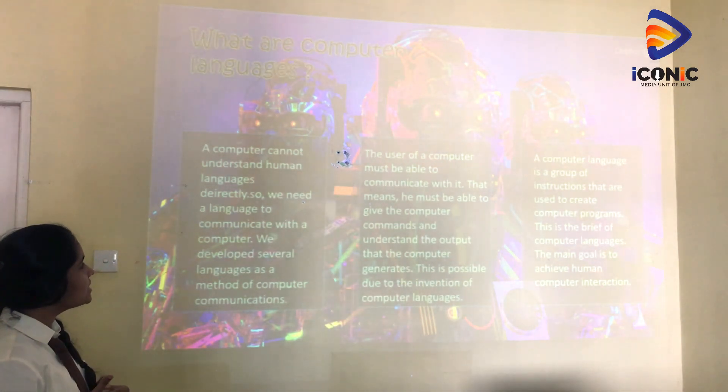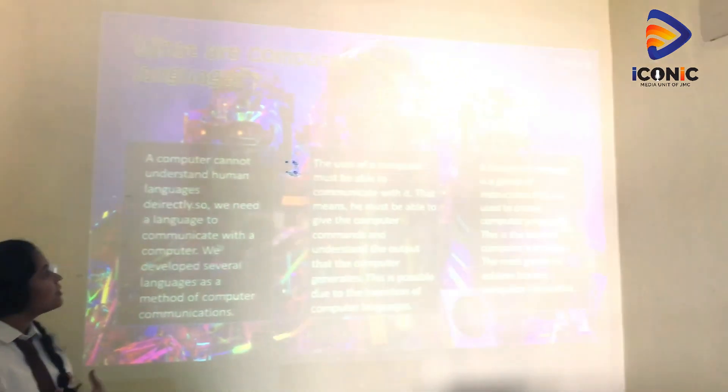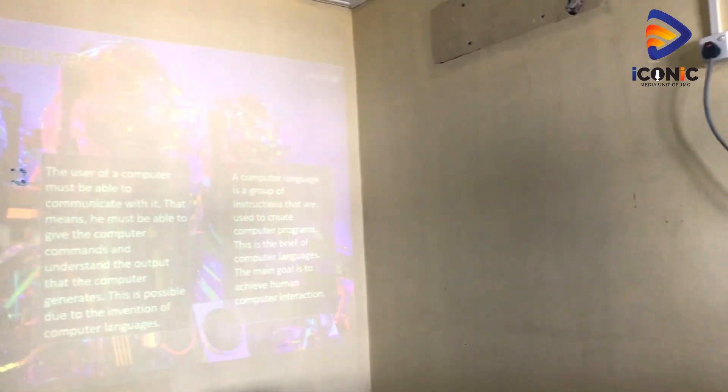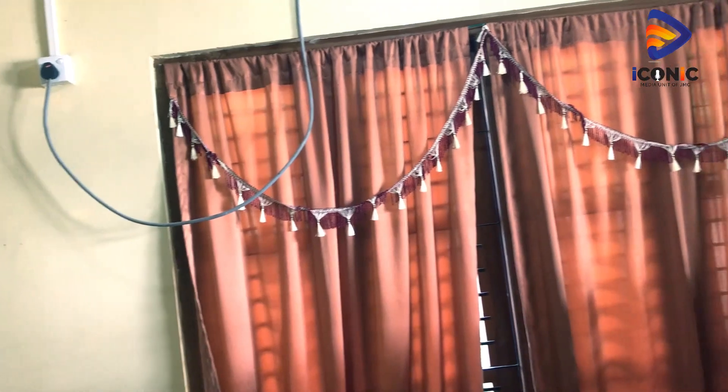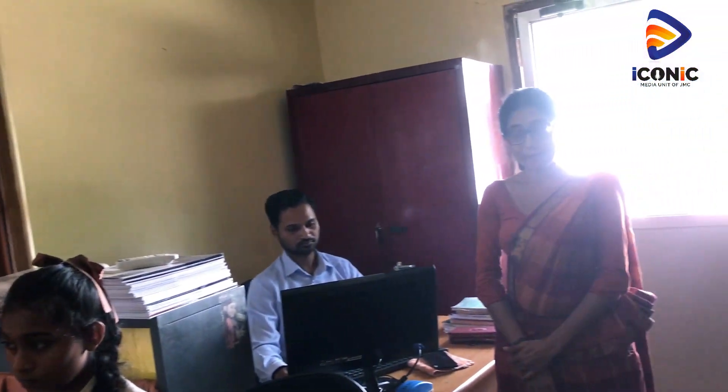The user of a computer must be able to communicate with it — that means the user and the computer must be able to communicate. The user must be able to give the computer commands and understand the output that the computer generates. The main thing a computer does is take the inputs, instructions, or commands that we give it, processes them, and gives an output.